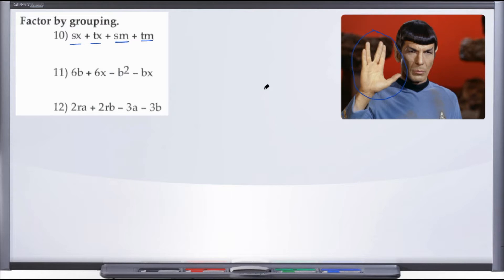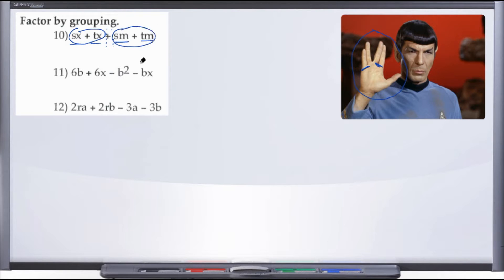When you have four terms, if you hold up four fingers and then split them right down the middle, just like Spock is doing here, you can see that we have a group of two. And that's exactly what we're going to do with factoring by grouping — we're going to split our expression right down the middle, grouping the two terms on the left together and the two terms on the right together, just like the Vulcan salute.